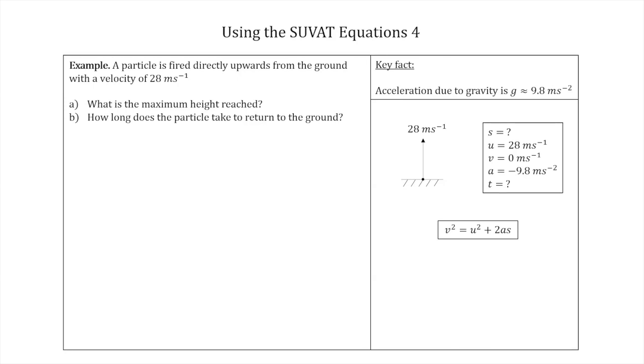So for A, we just plug in the information we have into this equation. So we say that zero, that's the final velocity squared, so that's the velocity when it's at the very peak of its motion before it starts to come back down. That's what we're concerned with. Is equal to 784, so that's 28 squared. Plus 2 times minus 9.8 times S, so that's 2 times acceleration times S, which is what we're trying to find out.